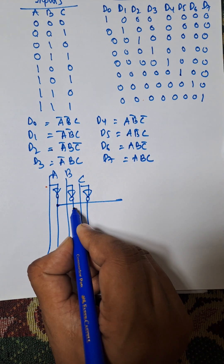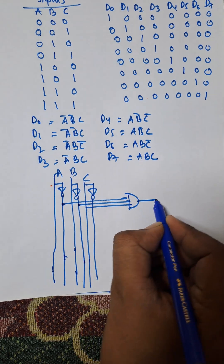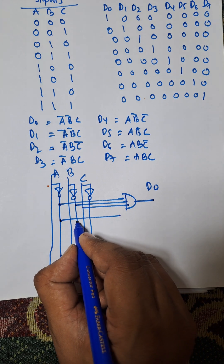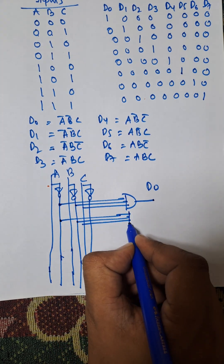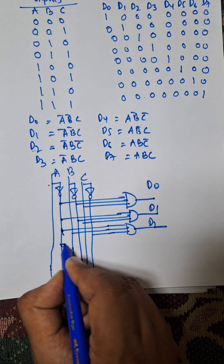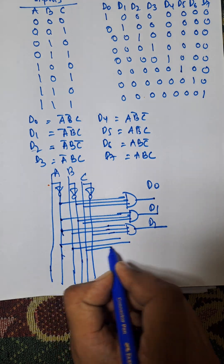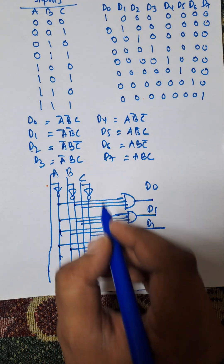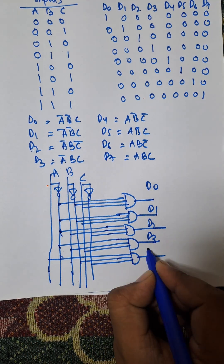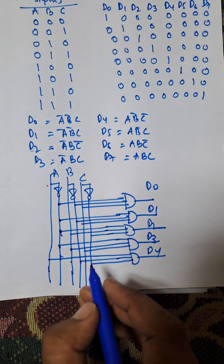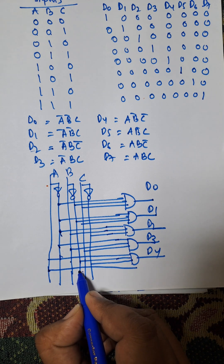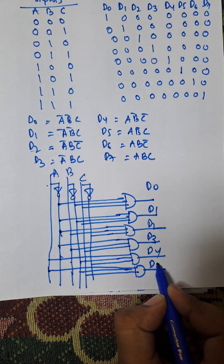Now we calculate each expression. D0 is A-bar B-bar C-bar. D1 is A-bar B-bar C. For D3, that is A-bar B and C. For D4, that is A B-bar C-bar.